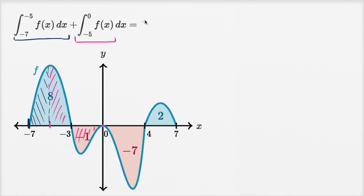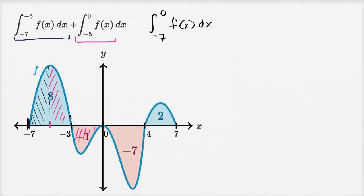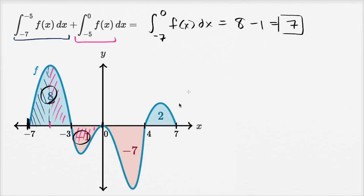So this integral can be rewritten as the integral from negative seven all the way to zero of f of x dx, which is just the net area between negative seven and zero. We have the positive eight, then the negative one, so eight minus one equals seven.